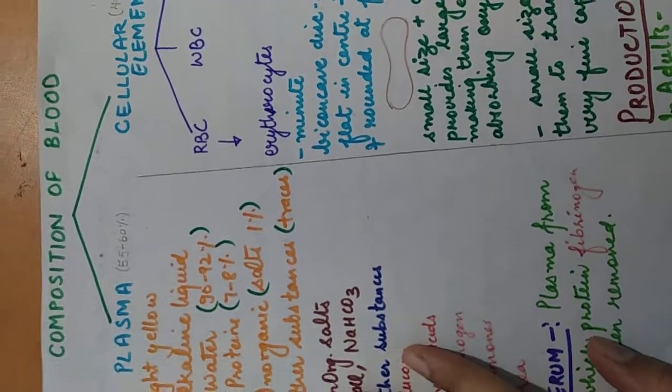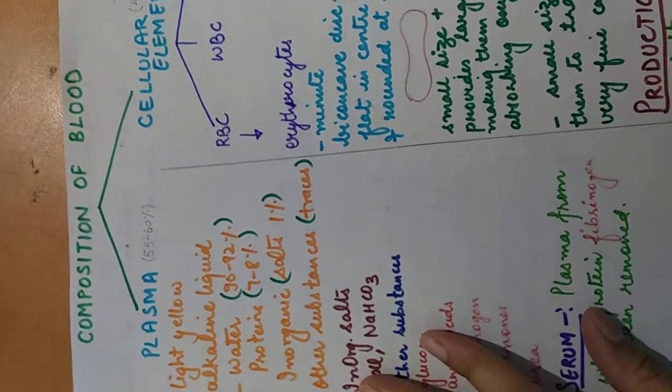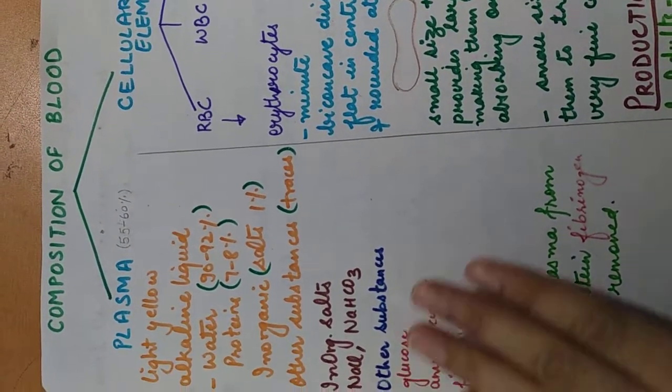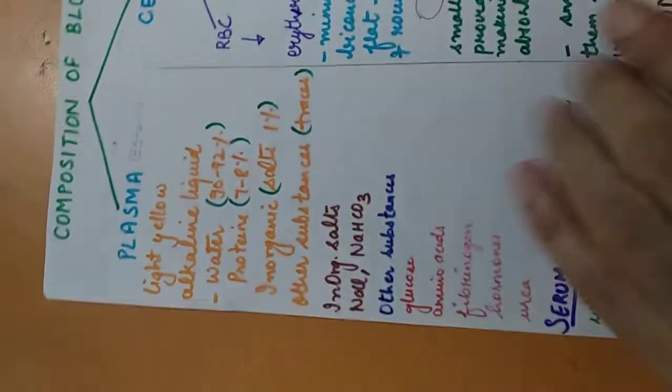Hello students, in today's video we want to read about the composition of blood. Blood is basically composed of two components: one is plasma and the other is cellular elements.